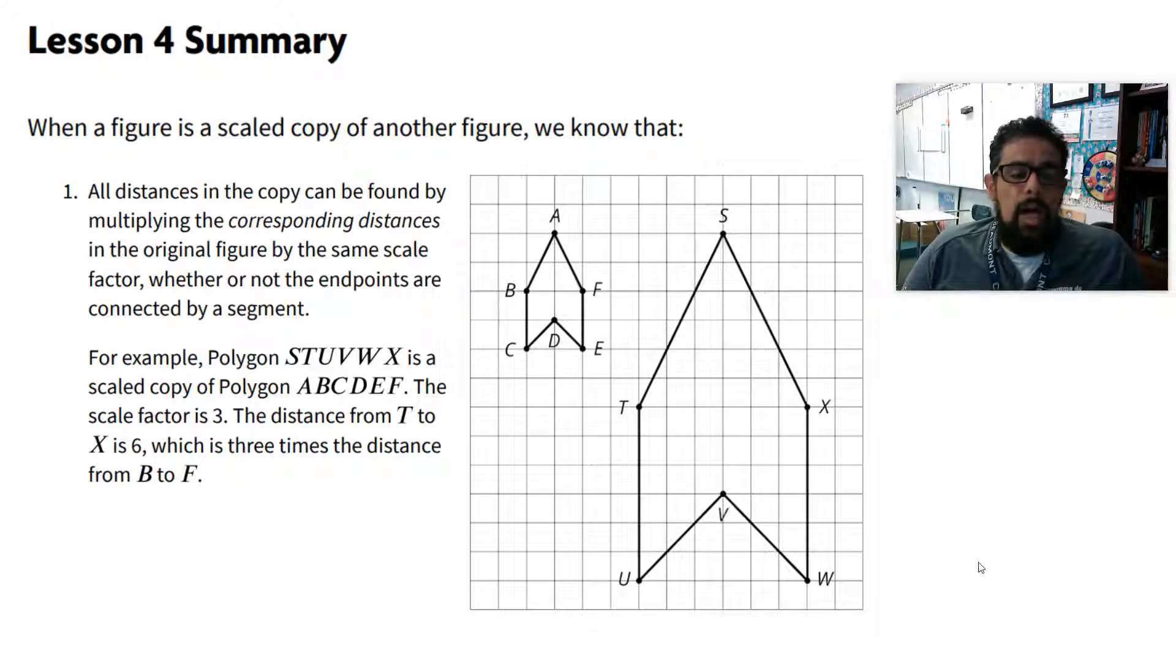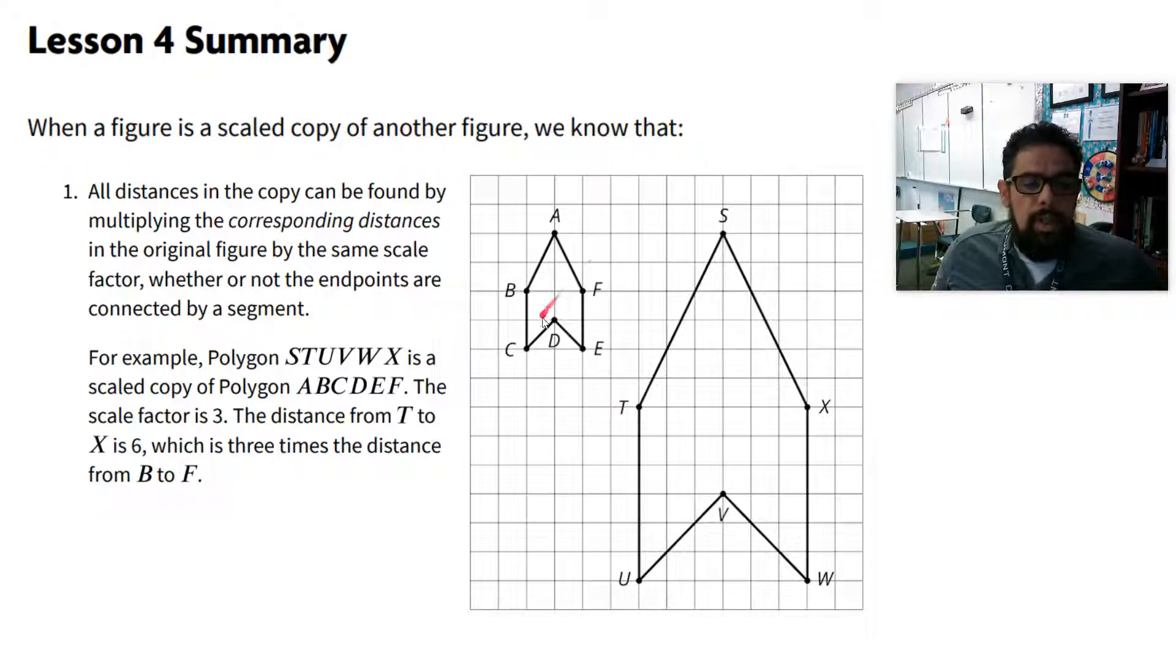When a figure is a scaled copy of another figure, we know that all the distances in the copy can be found by multiplying the corresponding distances in the original figure by the same scale factor, whether or not the endpoints are connected by a segment. For example, polygon STUVWX is a scaled copy of polygon ABCDEF.